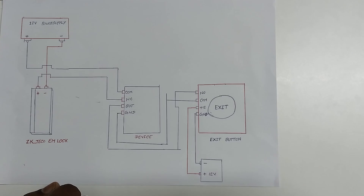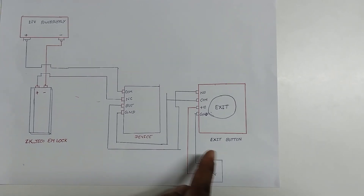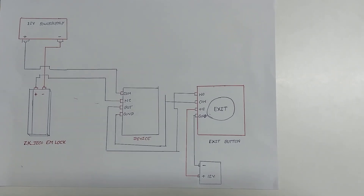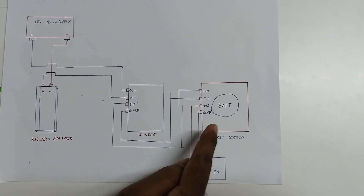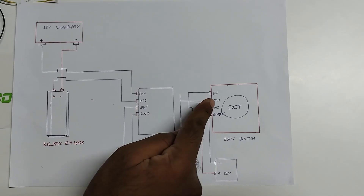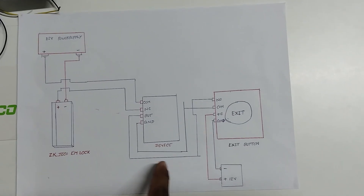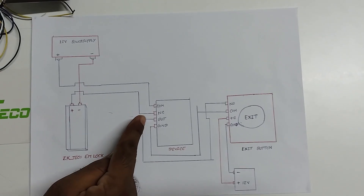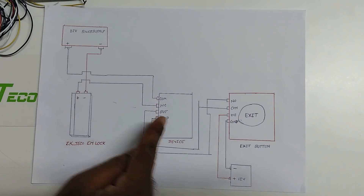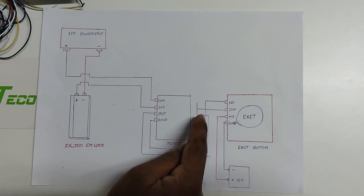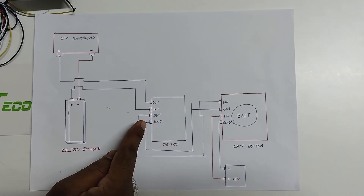Now I am going to explain how to connect the exit button with the Mini-AC device. From the exit button, NO should be connected with the Mini-AC device button, and COM should be connected with the ground in the device.